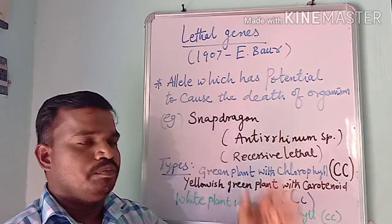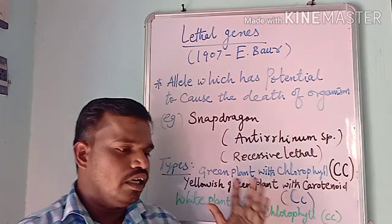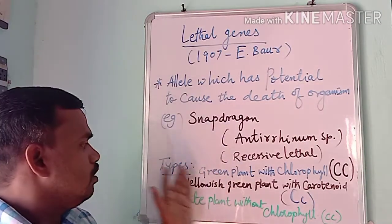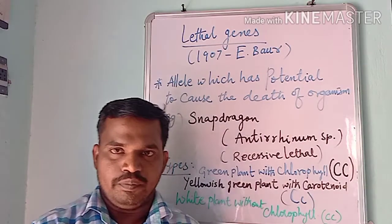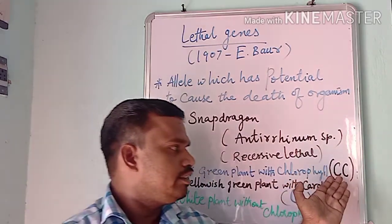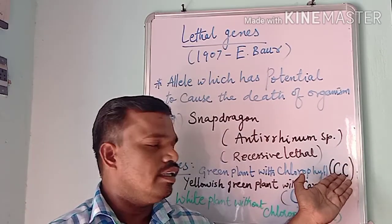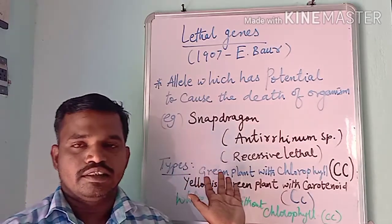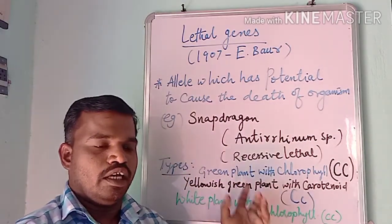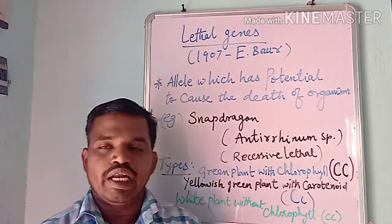This Antirrhinum species has three types of plants. The first type are green plants with chlorophyll — they carry dominant alleles, that is capital C and capital C. The second type are yellowish-green plants with carotenoids.